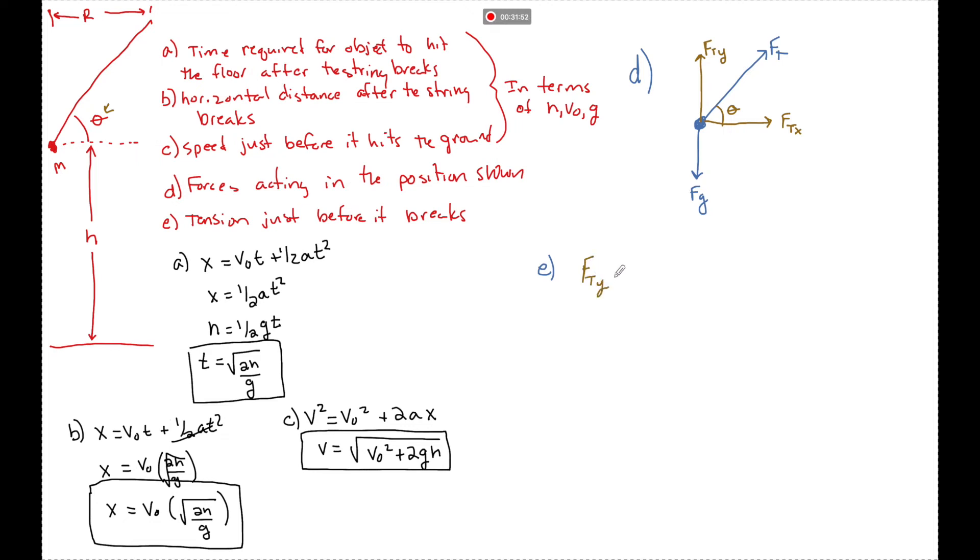Now just before the string breaks, it's not moving up or down, so we can say that the force of tension in the y direction equals fg. And we can also say that ft x is acting towards the center and it is the net force, or the only force acting towards the center, so that can be called the special name for the net force acting towards the center, which is fc. Ft y is going to be opposite. If I transpose that vector over to here, opposite theta and ft.